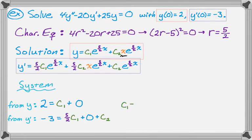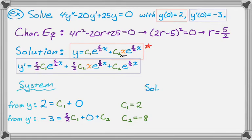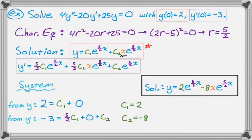We already know c₁ is two. Plugging two in for c₁ in the second equation, we get negative three equals five plus c₂. So c₂ is negative eight. Now we know what c₁ and c₂ are — we've found our particular solution. Going back to the general form and substituting, the solution looks like y equals two e to the 5/2 x minus eight x e to the 5/2 x. And there you go.